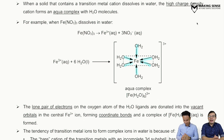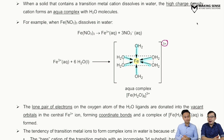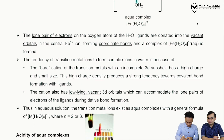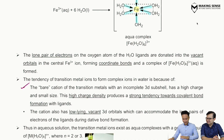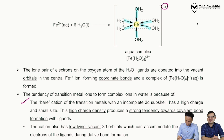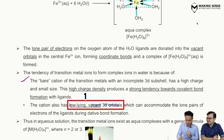So why can transition metal ions actually form complexes? There are two main reasons. The first reason is that to accept the lone pair of electrons, you need d orbitals that are vacant — completely empty — and not only that, they must be low-lying in energy.